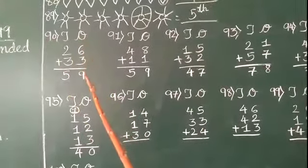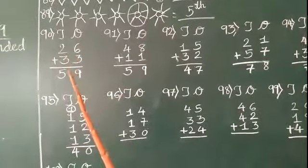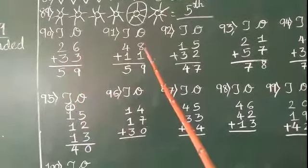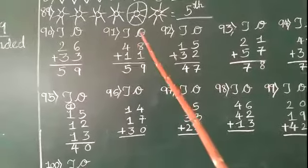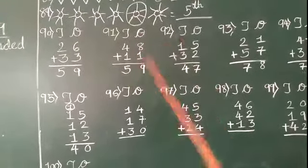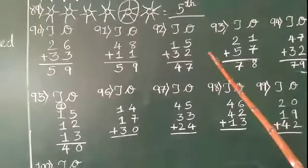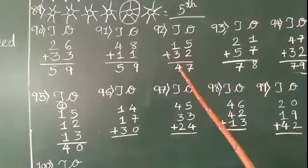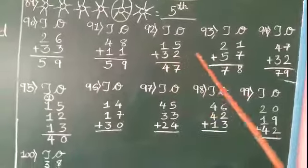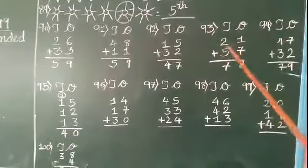5. Number 91: 8 plus 1 is 9, and 4 plus 1 is 5, so 59 will come here. 15 plus 32, so 5 plus 2 equals 7, and 3 plus 1 equals 4. Number 93: 21 plus 57. 7 plus 1 is 8, 5 plus 2 is 7, so